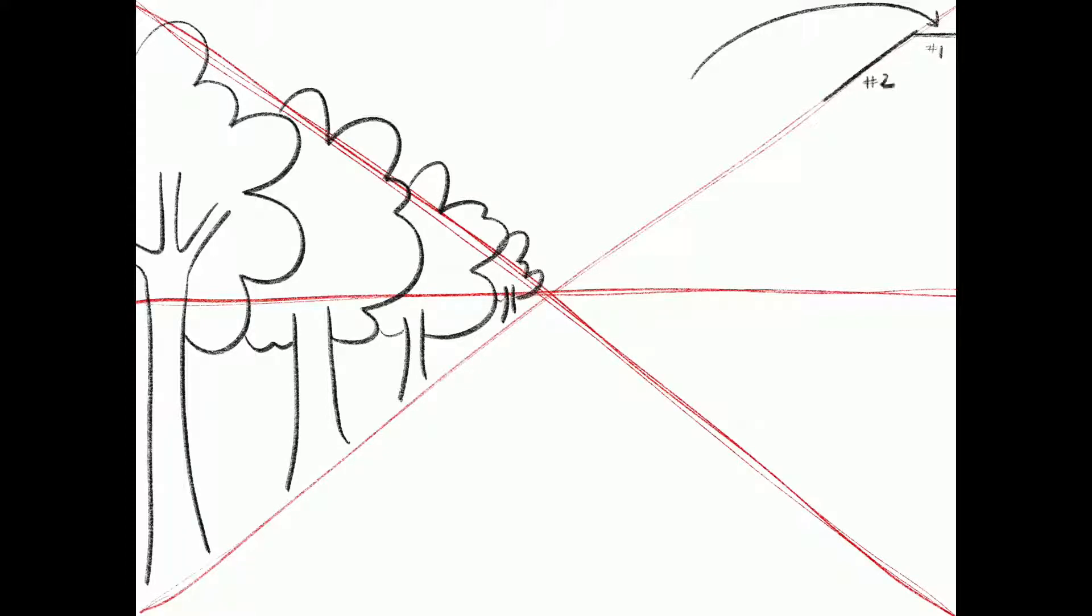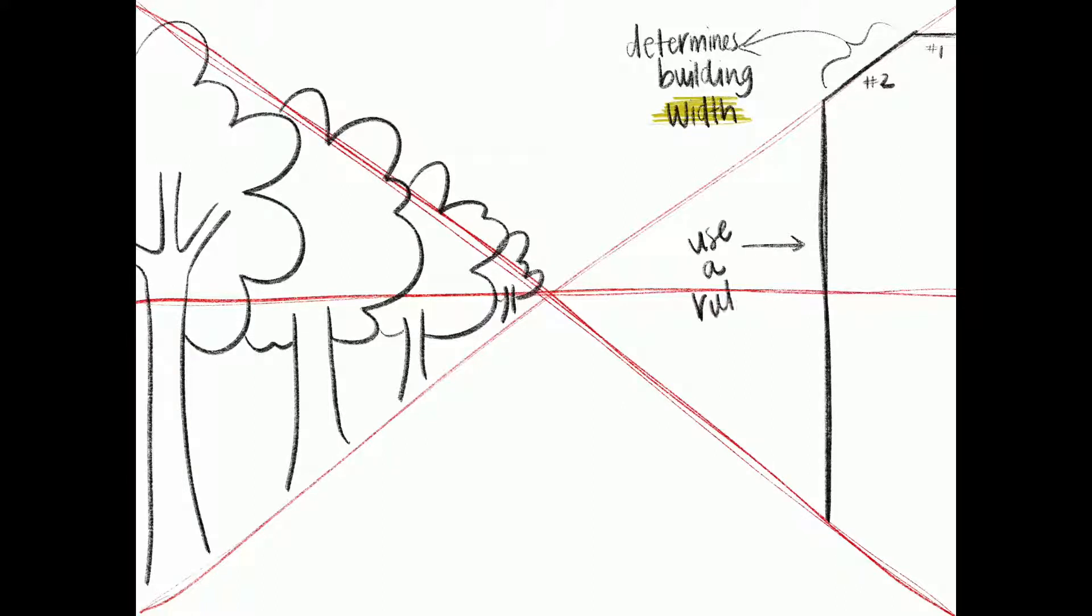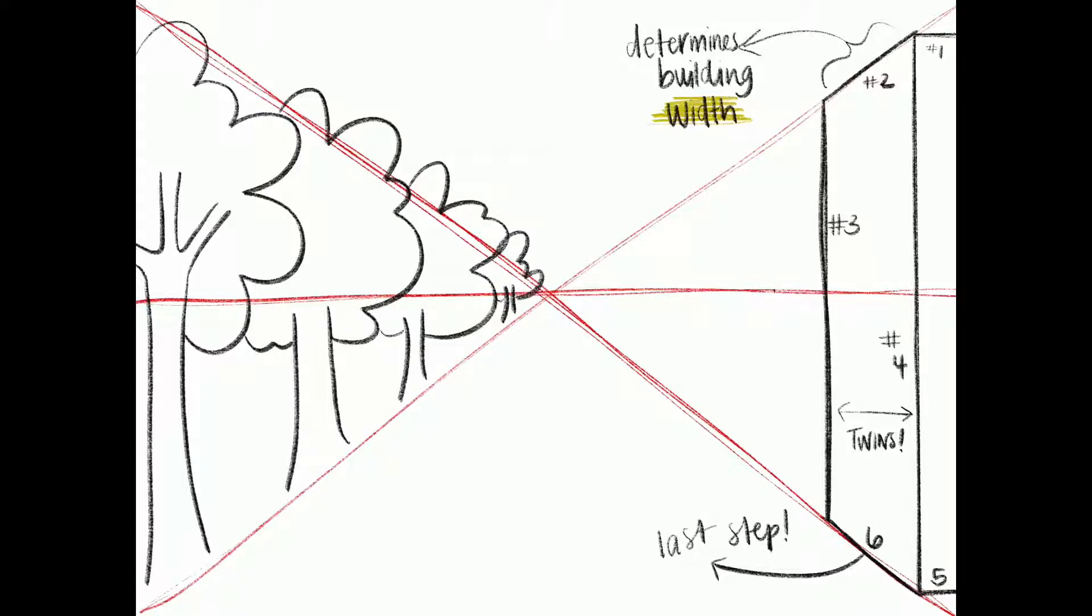Number two will measure the width of my building. Number three is going to go straight down. For this one you will need to use a ruler. This line is going to match the next line and the side of your paper. So line number four is another line that runs parallel to number three. They're twins. Number five is another basically tiny triangle and number six just finishes off the bottom of your building.